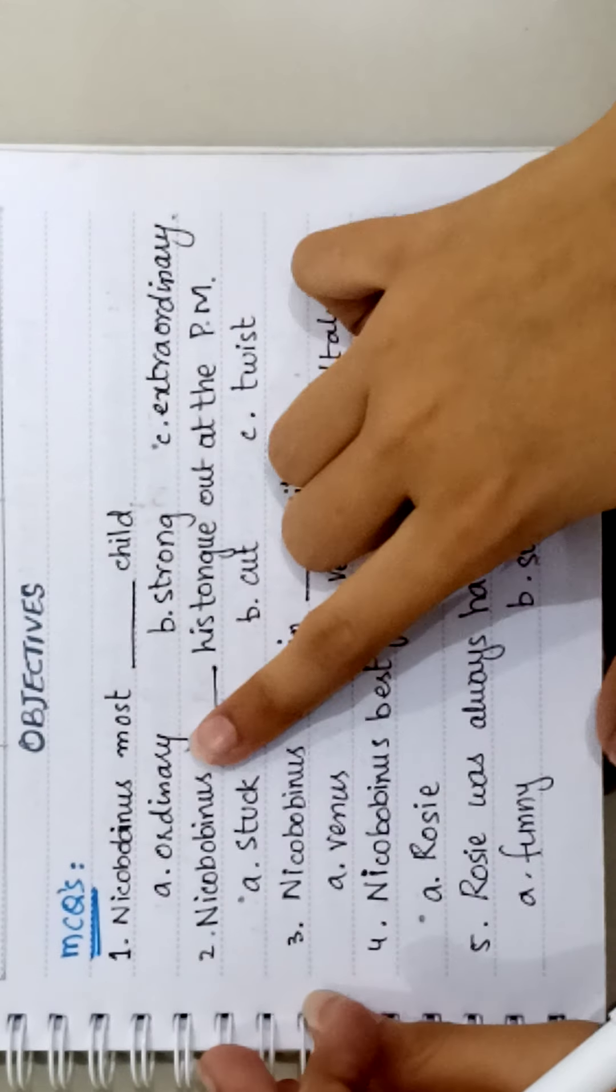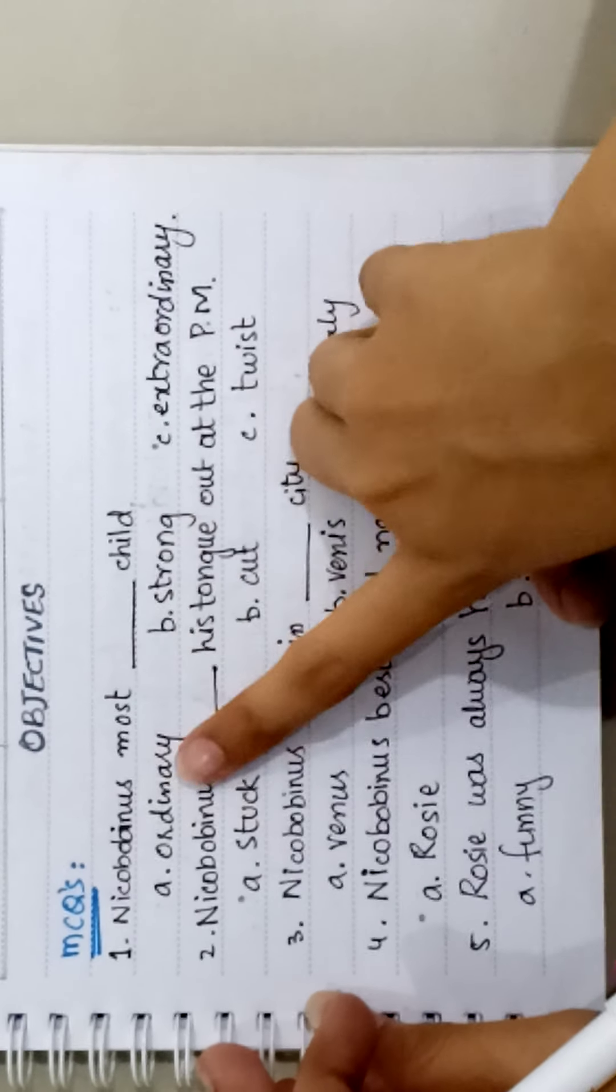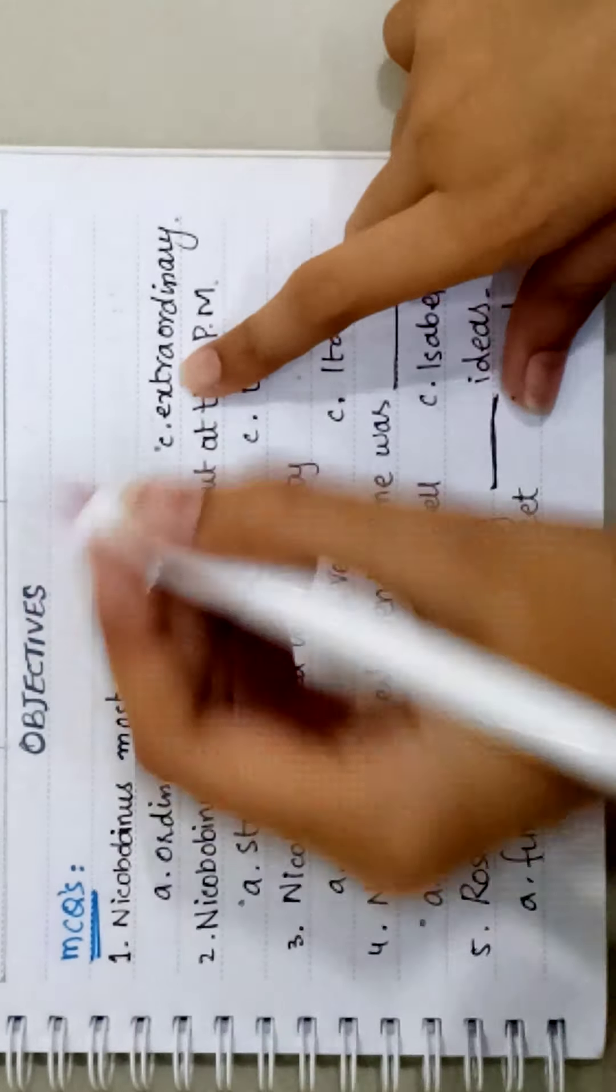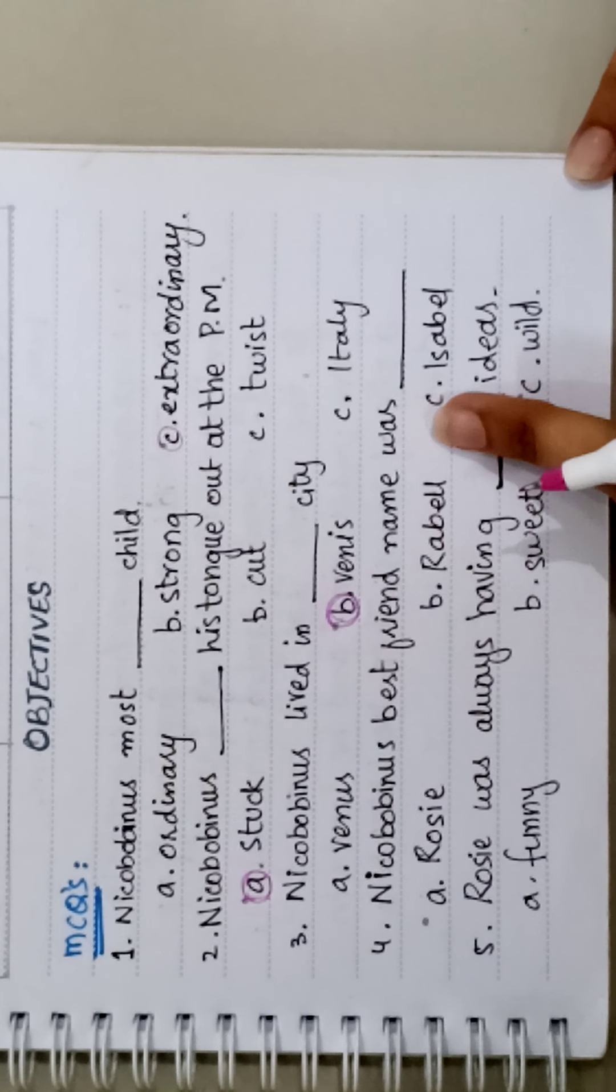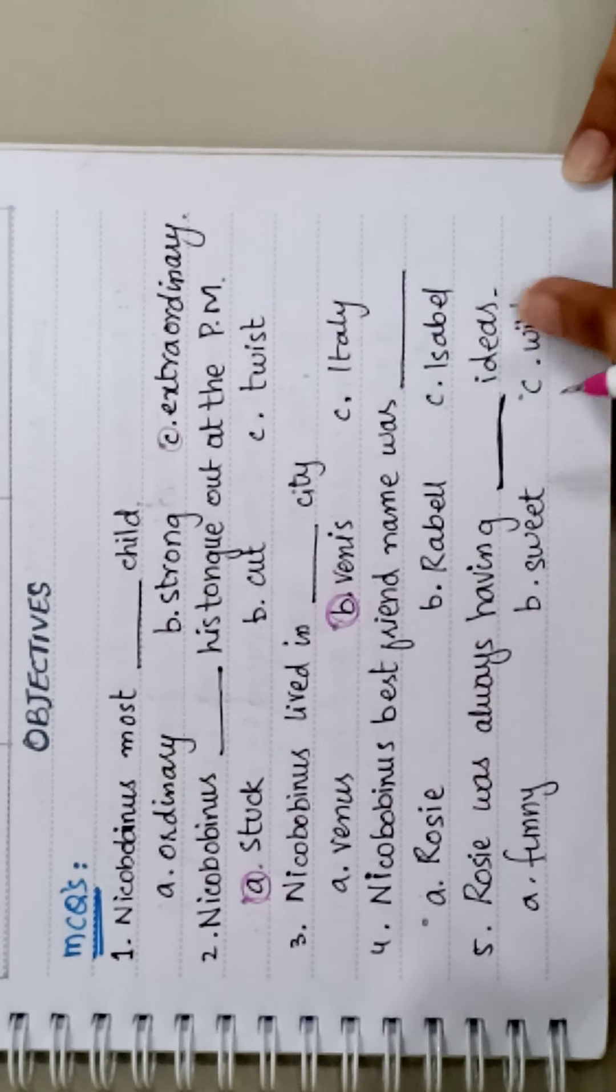In our chapter of last exercise which is objectives, first we have MCQs. First one is: Nicobobinus was most dash child: ordinary, strong, and extraordinary. Nicobobinus was most extraordinary child. Next one is: Nicobobinus dashed his tongue out at the PM. Nicobobinus stuck his tongue. Third, Nicobobinus lived in dash city: Venice.